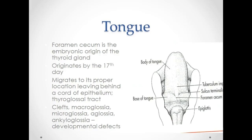Clefts, macroglossia, microglossia, aglossia, and ankyloglossia are developmental defects. Macroglossia is an excessively large tongue; microglossia is an excessively small tongue; aglossia is the absence of a tongue. Ankyloglossia is a tongue that is tied down to the floor of the mouth by a frenum attachment close to the tip of the tongue.